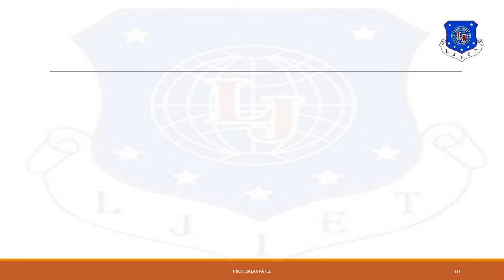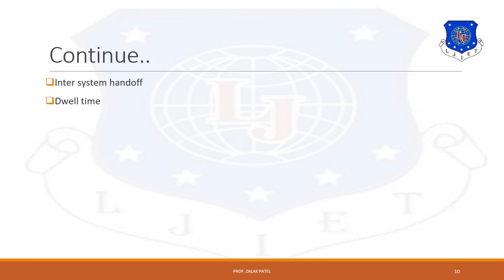The second handoff strategy is inter-system handoff. During a call in progress, if a mobile moves from one cellular system to a different cellular system, it is called inter-system handoff. The next concept is dwell time. As a mobile moves away from the serving base station, there is a drop in signal level. Dwell time is the time period for which a call is maintained within a cellular region. It depends on different factors like propagation or interference between cells.